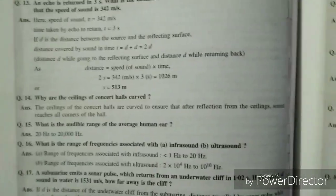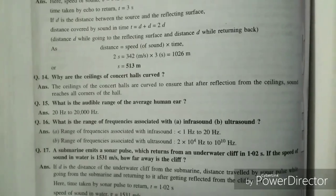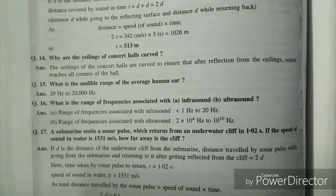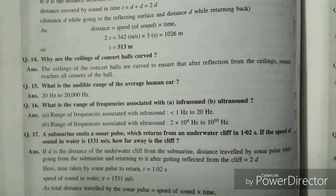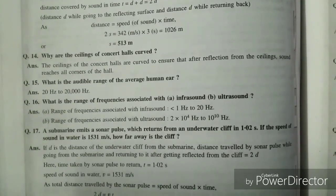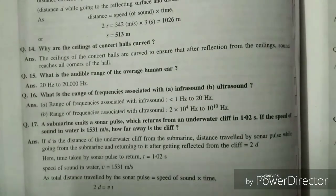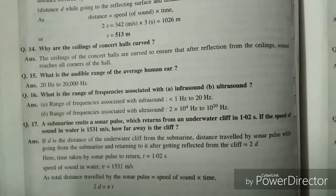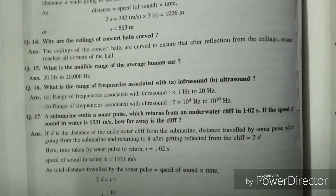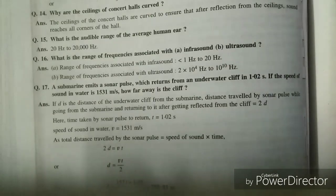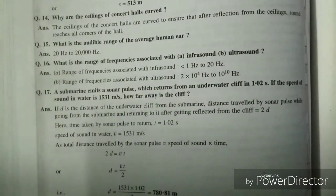Now next last question is a numerical. So a submarine emits a sonar pulse which returns from an underwater cliff. Speed of sound is 1531 meter per second. How far away is the cliff? You will know the distance that is 2d. Time you are given and speed is given. So distance is equal to speed into time. So 2d is equal to speed into time. And after solving it you will get the answer as 780.81 meter.